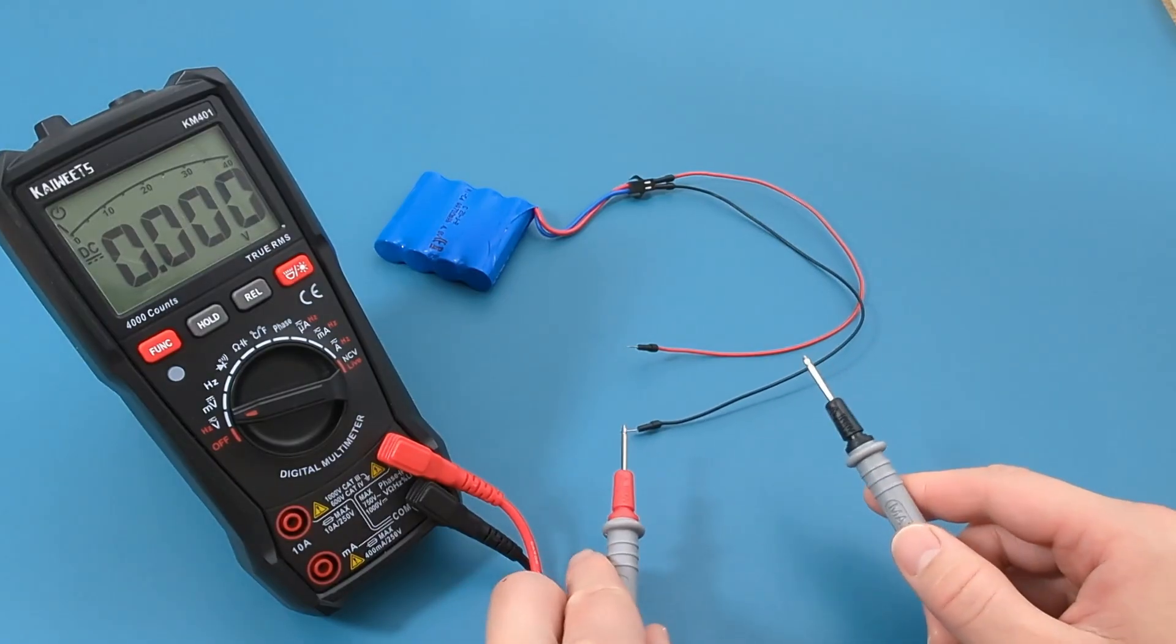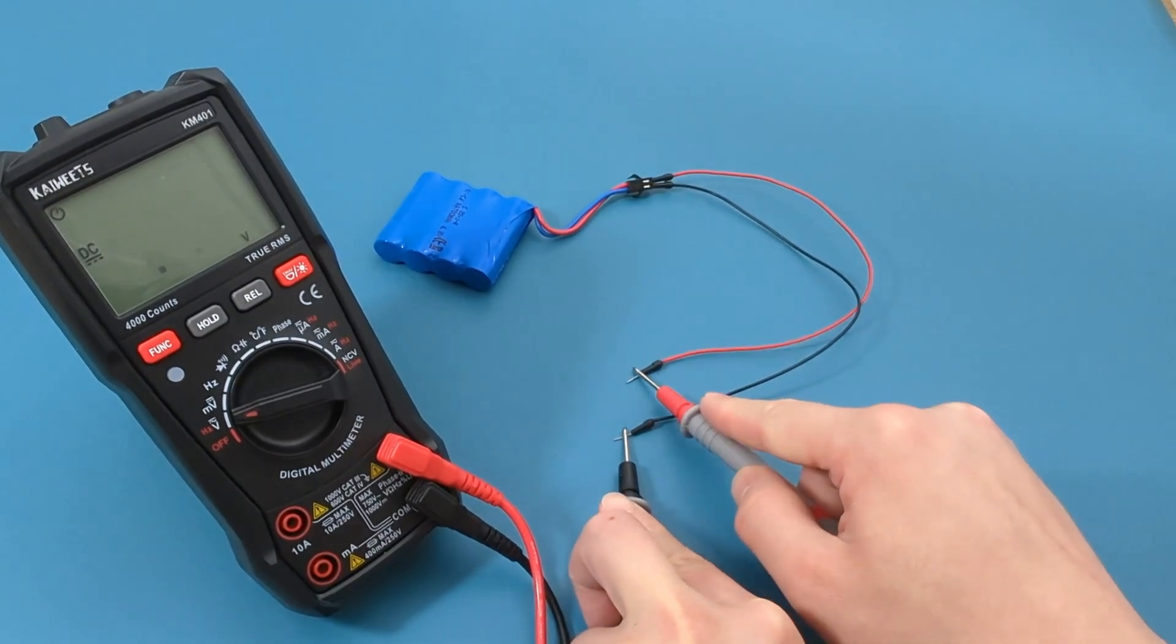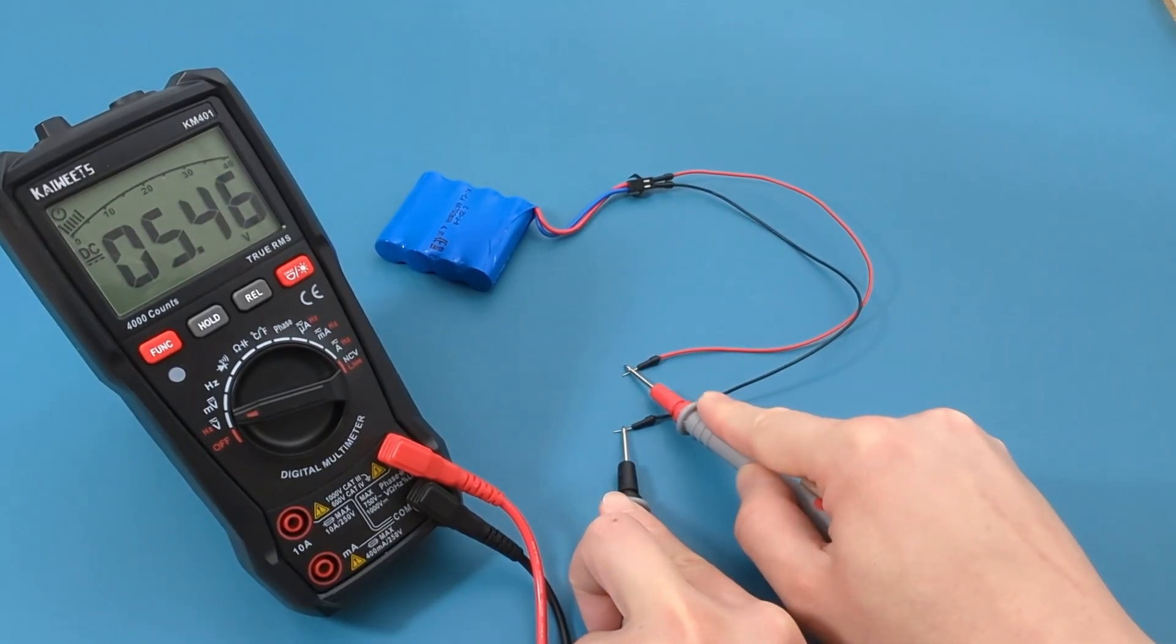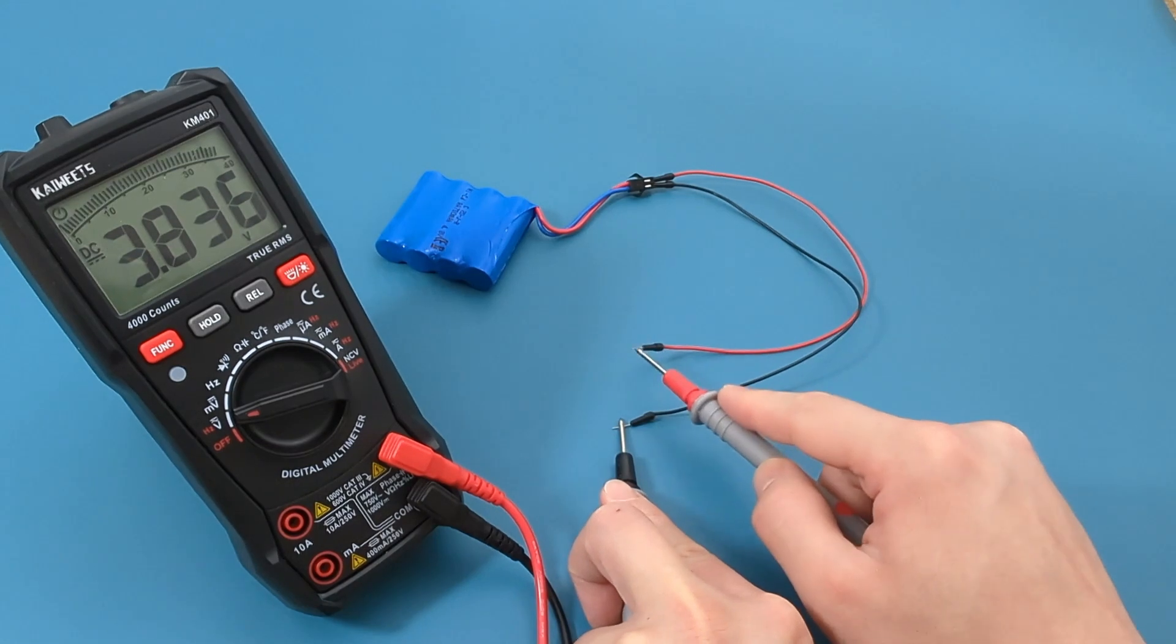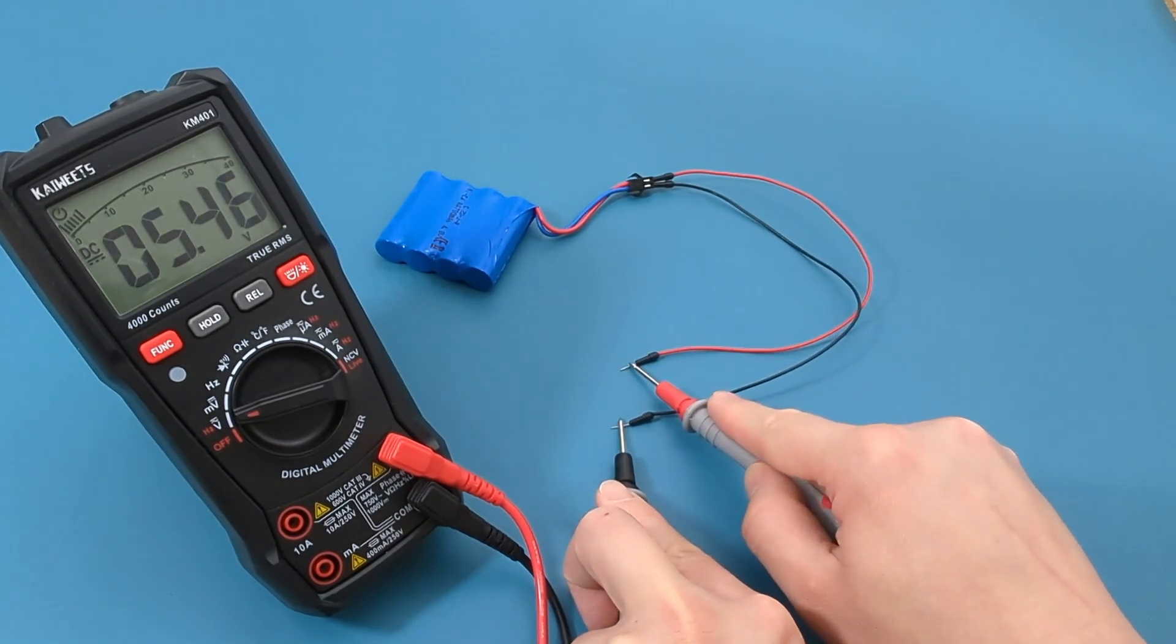Once again, touch the red probe lead to the red jumper wire and the black probe lead to the black jumper wire. The reading shows 5.46 volts. It's a little higher than the rated voltage, but it's acceptable.